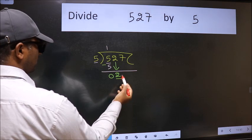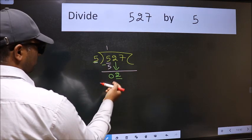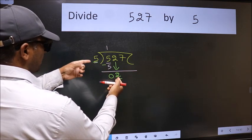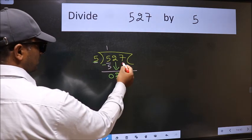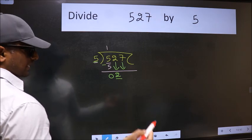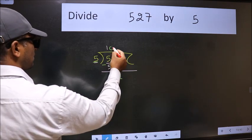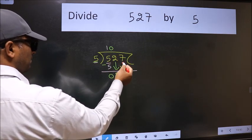Now here we have 2 and here 5. 2 is smaller than 5, so we should bring down the second number. And the rule to bring down second number is we should put 0 here, then only we can bring this number down.